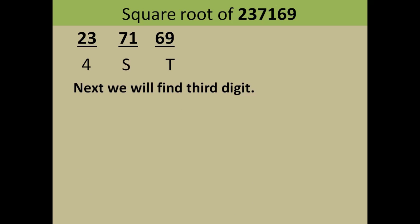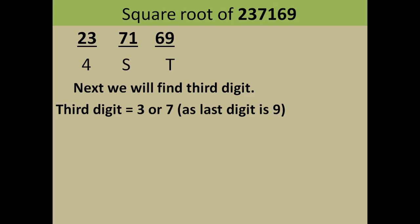Now we will find the second and third digits. We find the third digit first: as the last number is 9, and only the squares of 3 and 7 give the last digit 9, so the third digit will either be 3 or 7. We are not sure at this point whether it will be 3 or 7, but the last digit will be either 3 or 7.